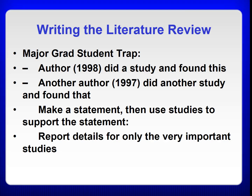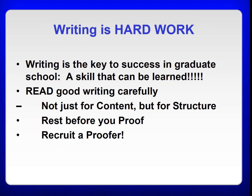The following are the major graduate student traps when writing the literature review. Some students write like this: 'Author 1998 did a study and found this. Another author 1997 did another study and found that.' Rather, we want to make a statement, then use studies to support the statement, and report details for only the very important studies.